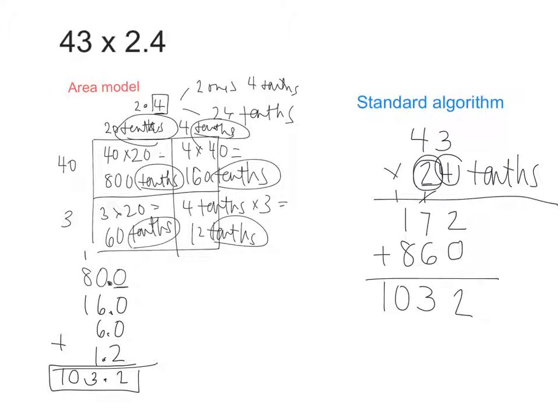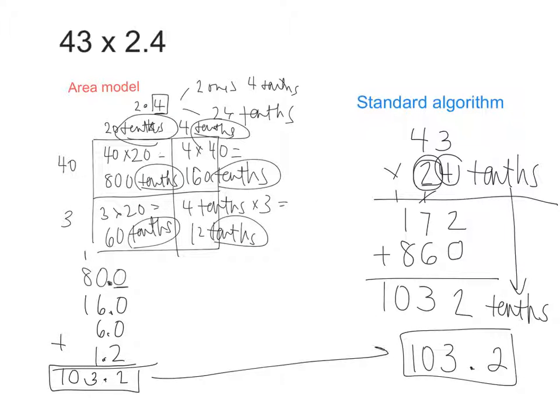Now this is 1,032, but then we have to bring down this word, which is tenths. Right? So how can I rewrite this number 1,032 tenths? That's the same as what whole number, Jack? 103 and 2 tenths. So we can see how when we use the area model and the standard algorithm, we get the same answer. If I were to add up these partial products, would they be the same as something else? What's 800 tenths plus 160 tenths? How many tenths do I have all together? 960 tenths, which is the same as 96.